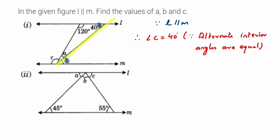Using the same property, this other line is also a transversal since l and m are parallel. Then this angle 120 and angle c are again alternate interior angles. So angle c is equal to 120 degrees — I'm sorry, in the previous step I wrote angle c is 40 degrees; that should be angle b is 40 degrees. So angle b is 40 degrees because 40 and b are alternate interior angles, and angle c and 120 are alternate interior angles.